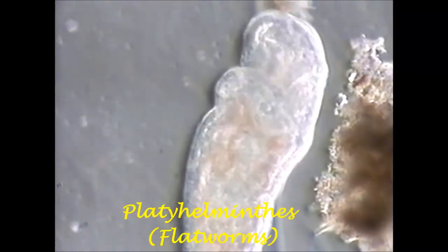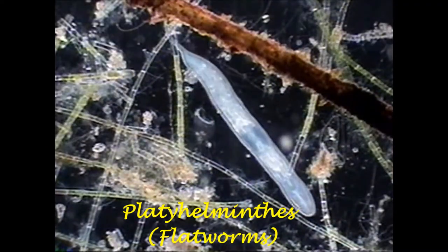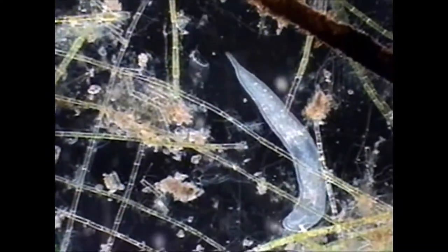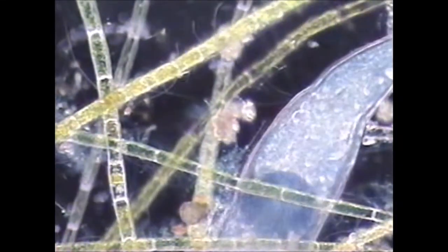Platyhelminthes, flatworms. Simplest of the worms. Approximately 25,000 species. The head region contains two simple brains or ganglia, which are simply bundles of nerves. Two nerve cords run down the sides of the worm.